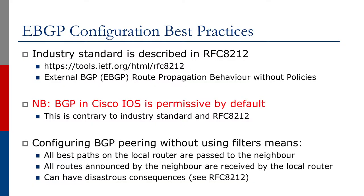The industry standard for eBGP is described in RFC 8212, which can be found at the URL shown on the screen. This RFC describes eBGP route propagation behavior without policies.